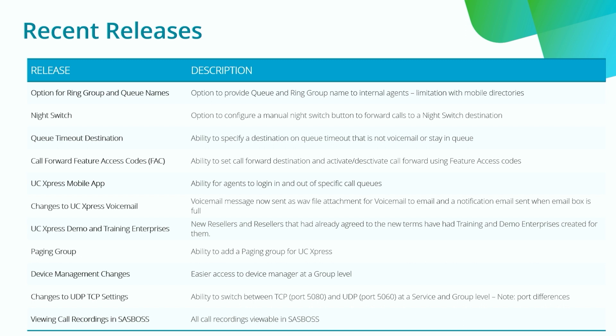The first feature is the option for ring group and queue name display. This is important for customers who want to display to agents which queue or ring group a call is coming through from. You get the CLI of the caller but also the ring group or queue name appended to that. There is a limitation on the mobile app — if that caller ID matches a name in the mobile directory, the ring group and queue name is replaced by that directory name. We're working with the vendor to overcome this. On the desktop app and handsets you still see the ring group and queue names.